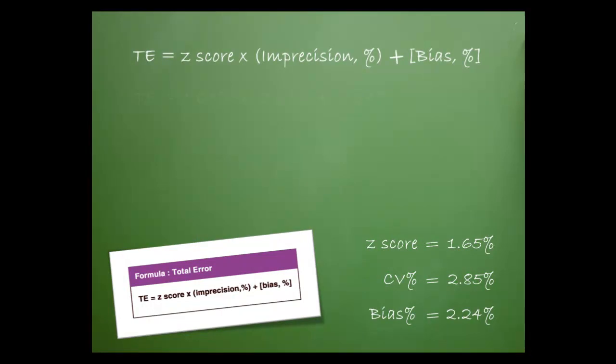Let's begin by copying down the formula, and then by substituting in the values. We multiply the z-score by the CV percent. Then add the bias percent. The TE turns out to be 6.9%.